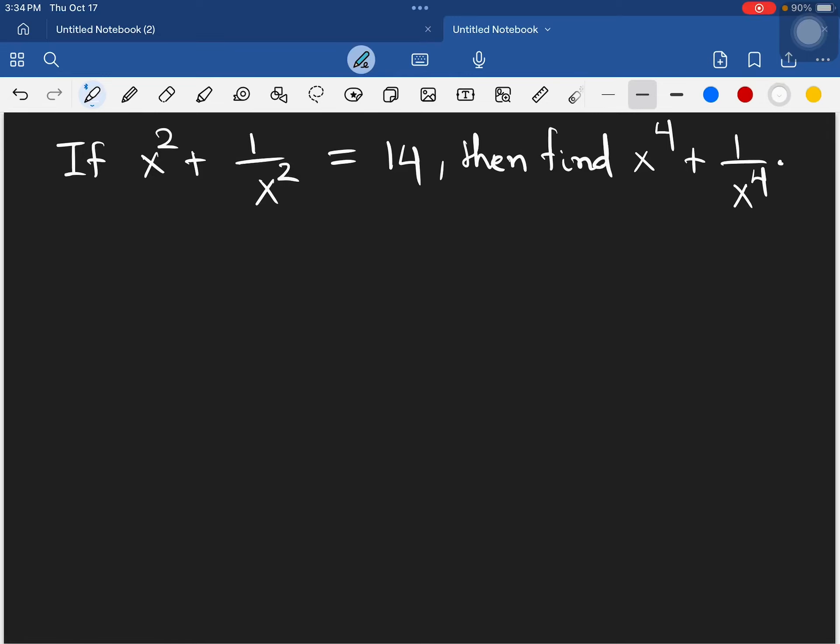If x squared plus 1 over x squared equals 14, then find x to the power 4 plus 1 over x to the power 4.